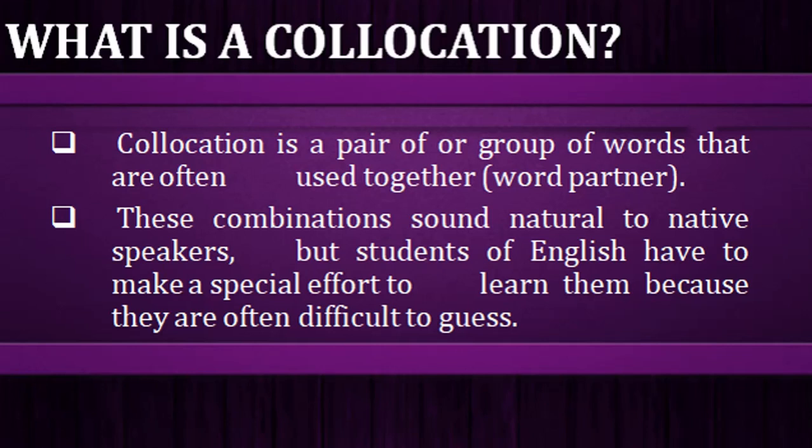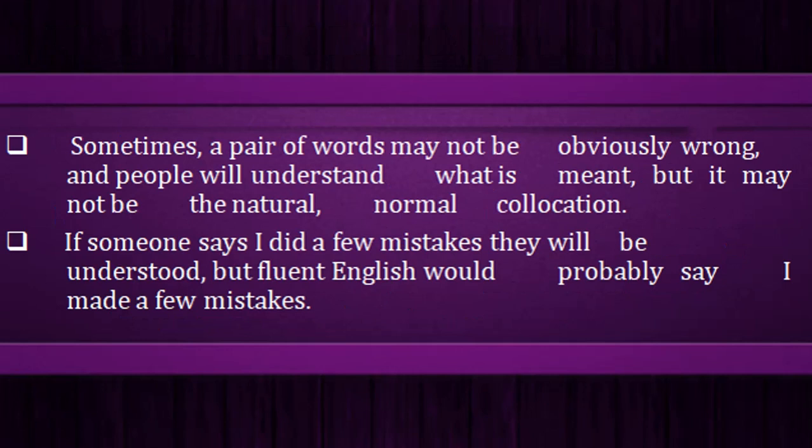Students of English have to work hard at collocations because some word combinations are difficult. Sometimes a pair of words may not be obviously wrong and people will understand the meaning, but it may not be the natural, normal collocation. For example, if you say 'I lost the bus,' the meaning is understood, but the correct collocation is 'I missed the bus.' Similarly, 'I did a few mistakes' is understood, but fluent English would say 'I made a few mistakes.' Another example: 'she committed suicide' — we cannot say 'she undertook suicide' or 'she did suicide.' These are the collocations normally used by native speakers.